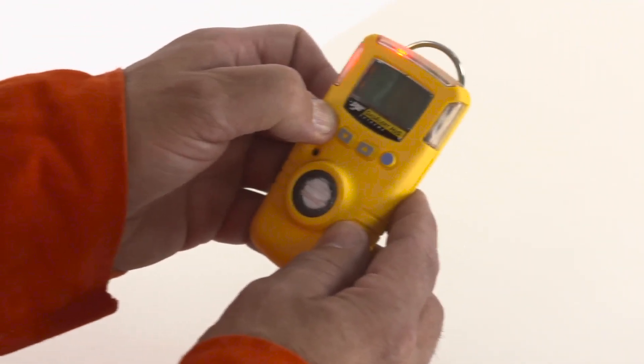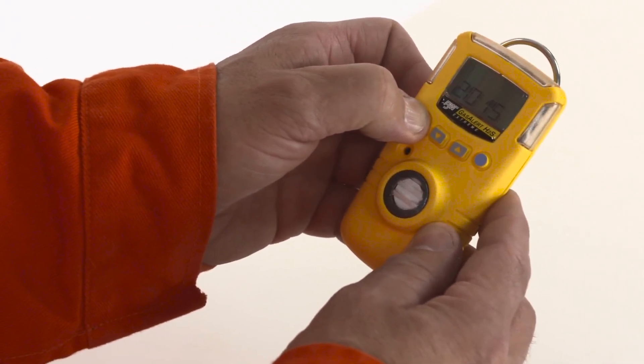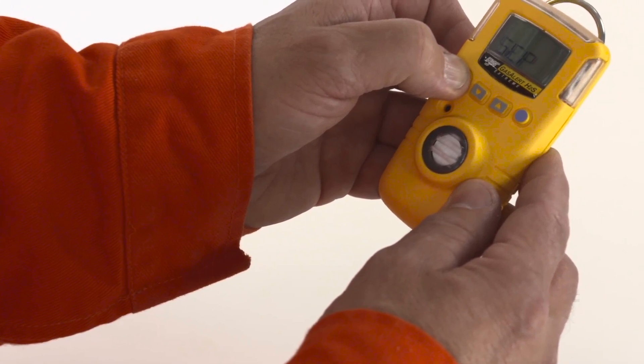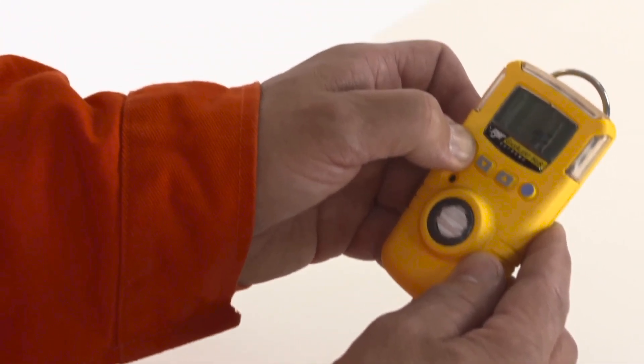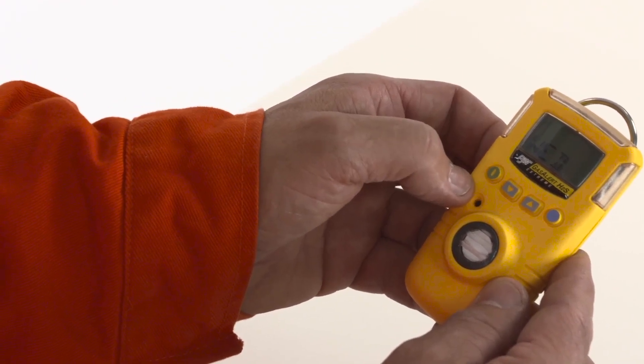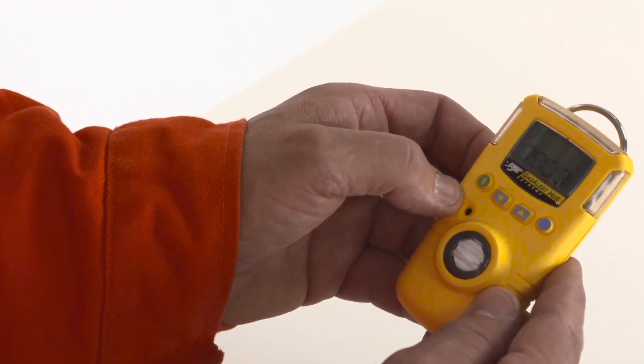To activate the detector, press the green button for three seconds. The detector will test the visual LED light, audible signal, and vibrate momentarily. This indicates that the detector is activated and performing a self-test.